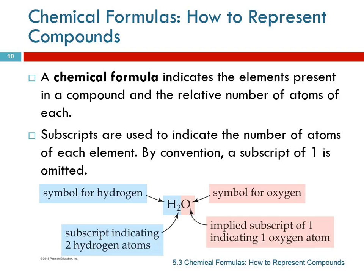If there were zero oxygens, I wouldn't have written the symbol in the first place. So the fact that I wrote oxygen tells you there's at least one. If there's more than one, I'll put a number. The element symbol alone means one; if there's more than one, you write a subscript.